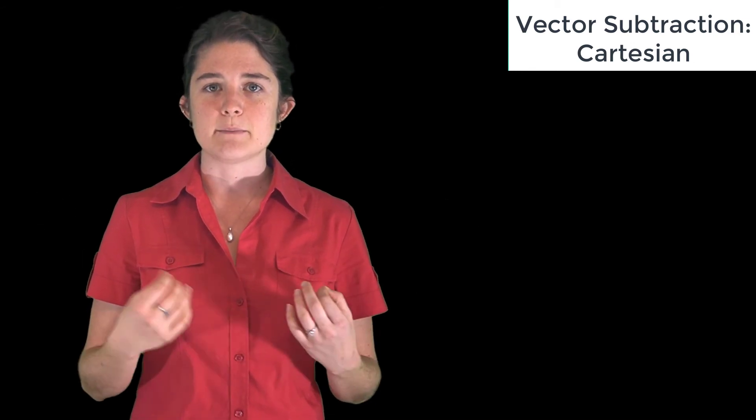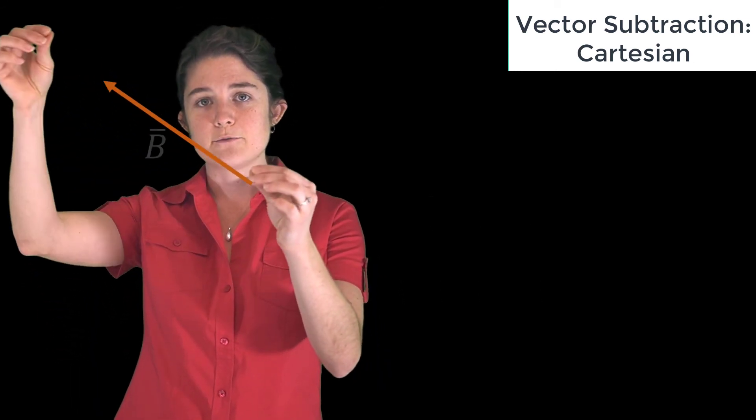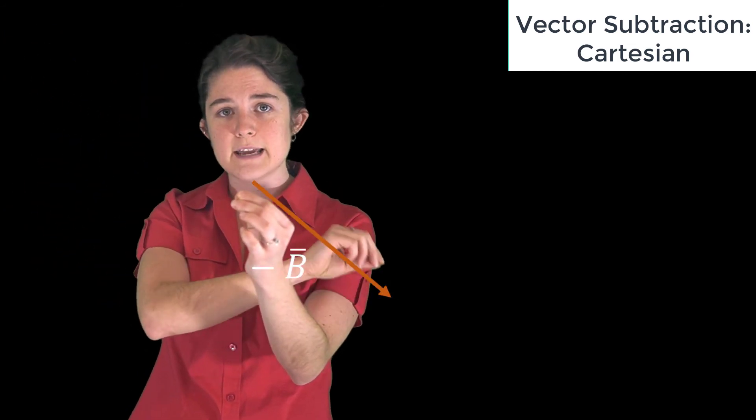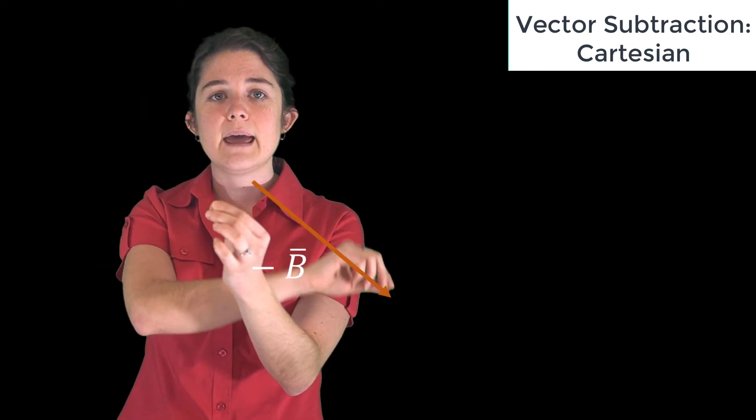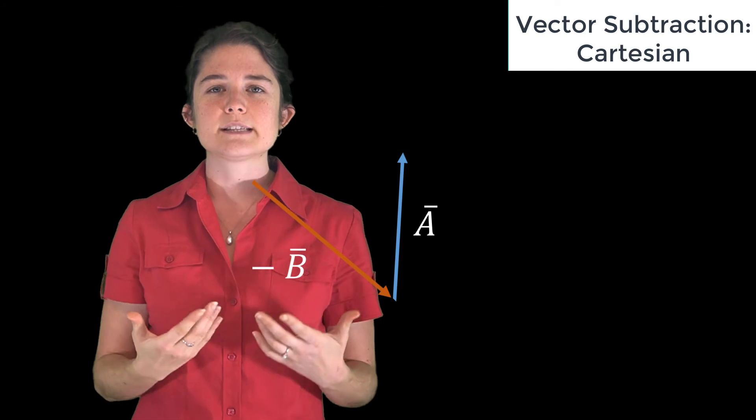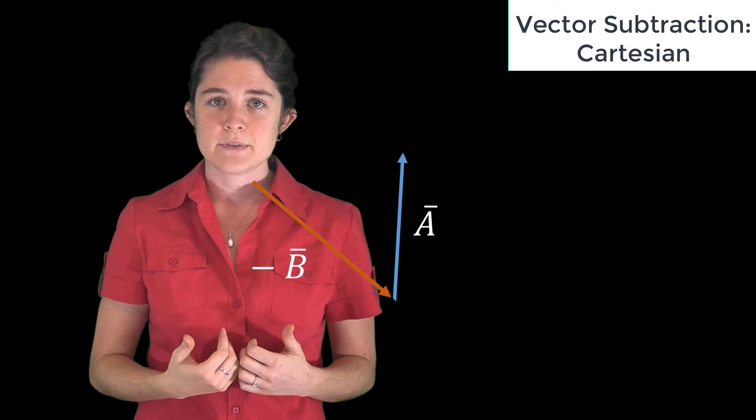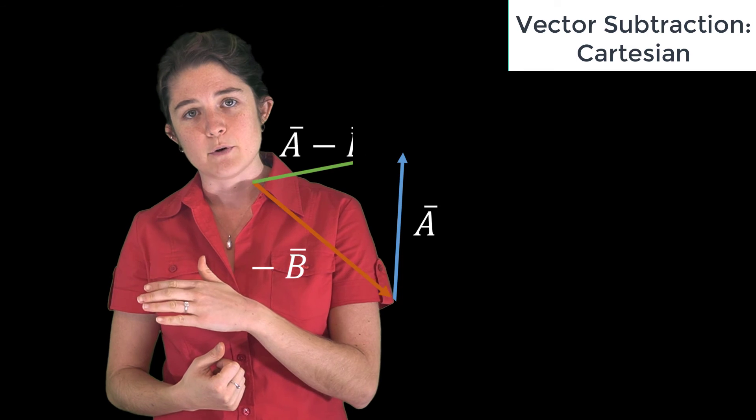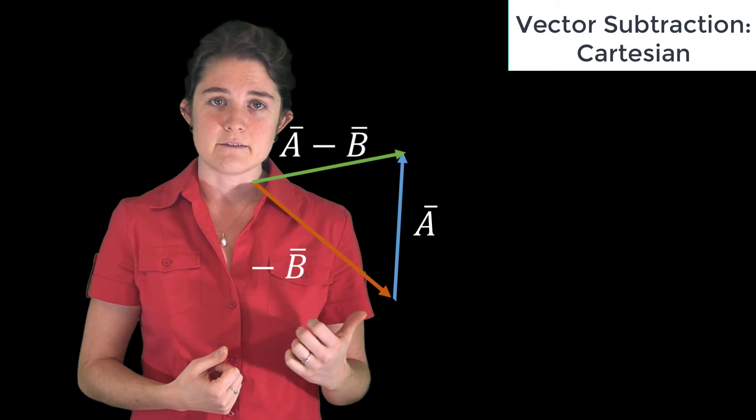So if you're subtracting B from A, you'll begin by flipping the direction of B to find negative B, then you add A and negative B using the same tip-to-tail method as before. The difference of the two vectors is the vector pointing from the origin to the tip of the second vector.